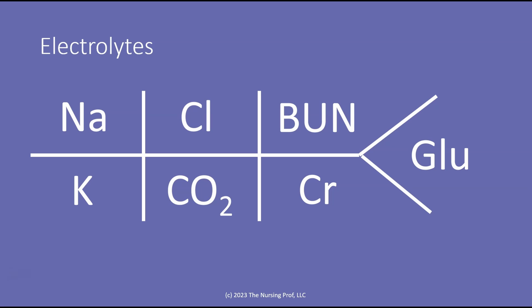So that you can report them to the next shift. This is called fishbones, and there is a specific way that these things are set up. These are the electrolytes: we have sodium and then potassium, chloride, CO2, BUN, creatinine, and finally our glucose.